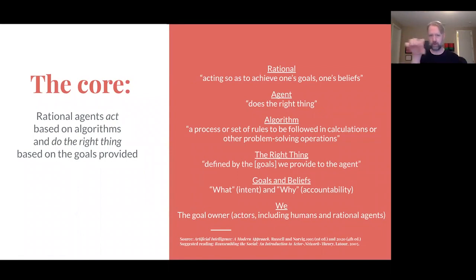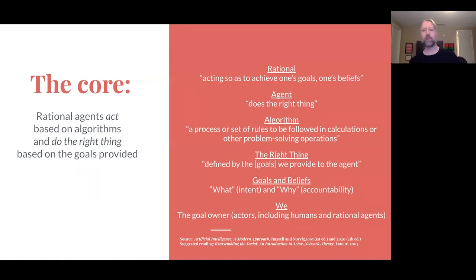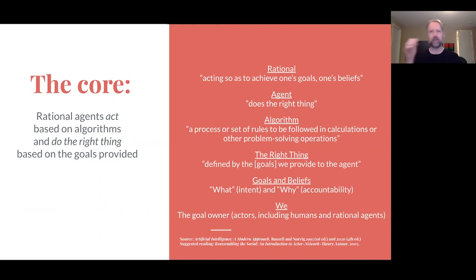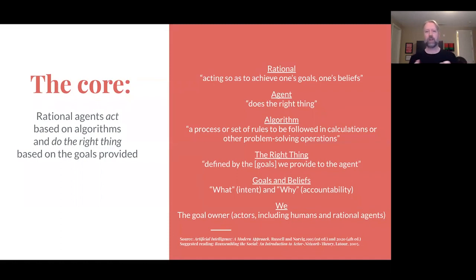I'm pulling these definitions specifically from Artificial Intelligence: A Modern Approach by Russell and Norvig, which first came out in the mid-90s and was recently revised in a fourth edition. What I wanted to do was step back from the term AI and decompose this into the things that are doing the stuff. Rational means acting so as to achieve one's goals or beliefs. Agent means doing the right thing. So it's something that acts to achieve one's goals and beliefs, and does the right thing based on them.